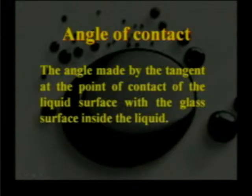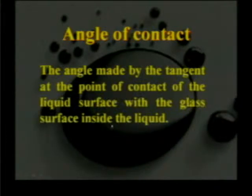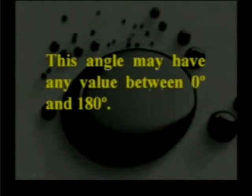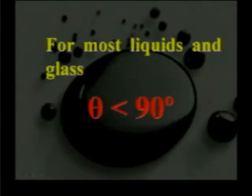The angle of contact can be defined as the angle made by the tangent at the point of contact of the liquid surface with the glass surface, measured inside the liquid. This angle may have any value between 0 and 180 degrees. For most liquids and glass, theta is less than 90 degrees. For example, for water and glass, the angle of contact is 0 degrees, which is less than 90 degrees.